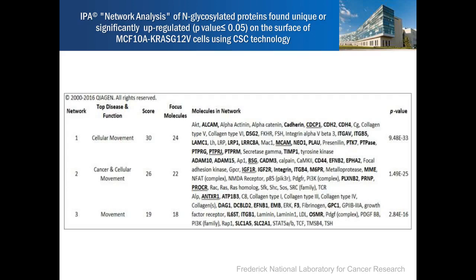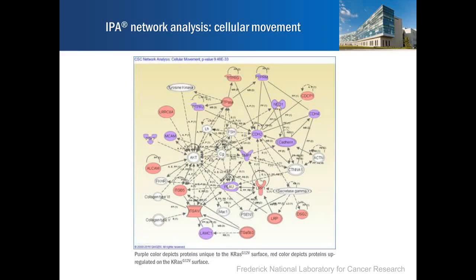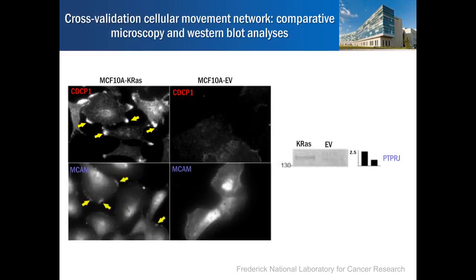Proteins shown in purple are identified only on the cell surface of K-RAS mutant cells and are upregulated in these cells. Using confocal microscopy, we showed that CDCP1 is very much located in the lamellipodia of MCF10A K-RAS cells as well as in MCF10A-M2. We have seen that the empty vector cells do not show that kind of staining. We also showed this for PTPRJ.